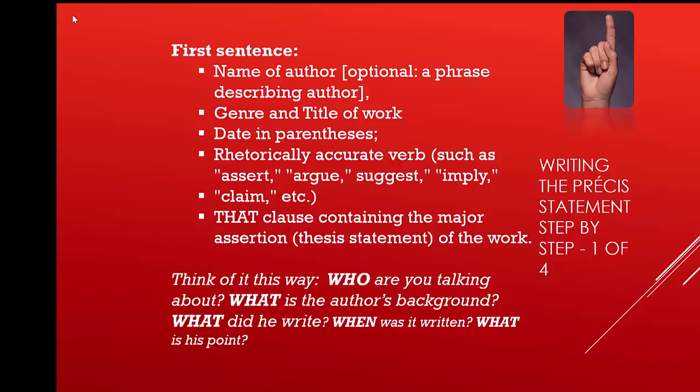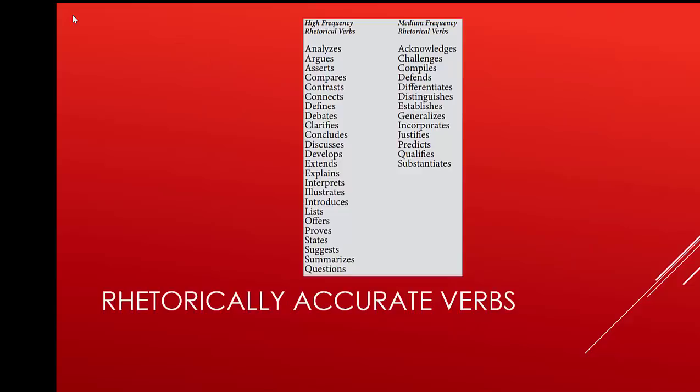Think of it this way: Who are you talking about? What is the author's background? What did he write? When was it written? And what is his point? Here are some rhetorically accurate verbs that can help you when you're writing this first sentence. It's a good idea to take a picture of these, get familiar with them, and use as many of them as possible. Make sure you stop this video and write down the words, and if there are any you don't know, look them up. See how strong they are — what temperature are they in terms of how strongly or weakly the writer has given the point.